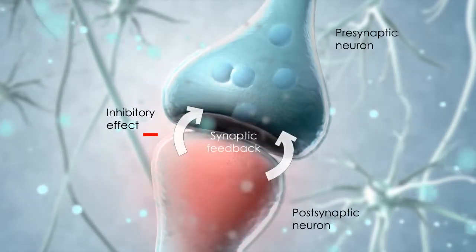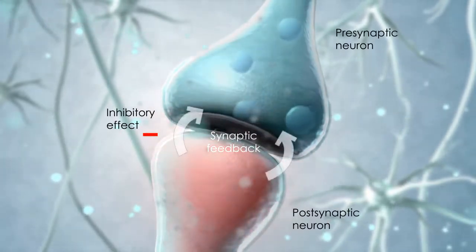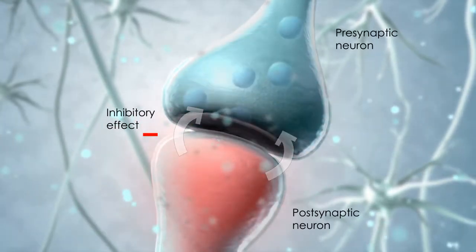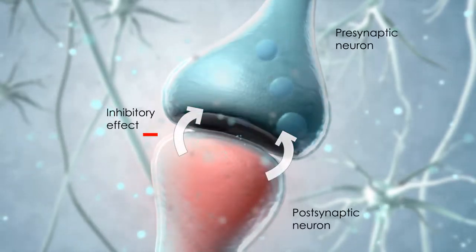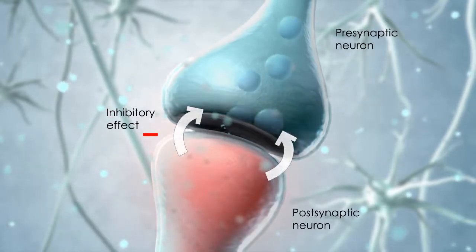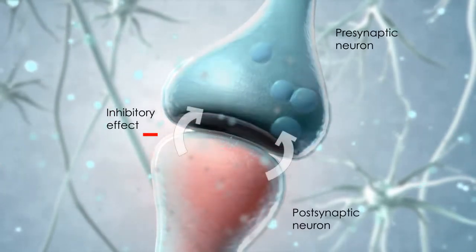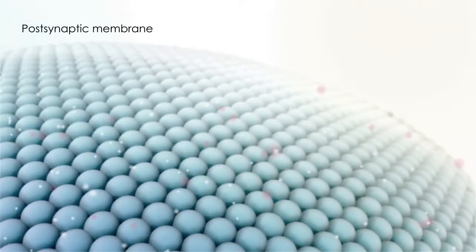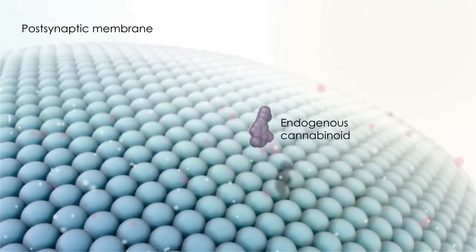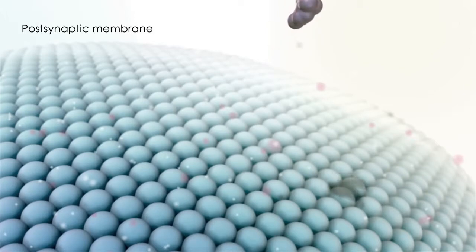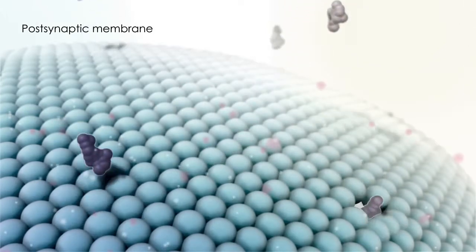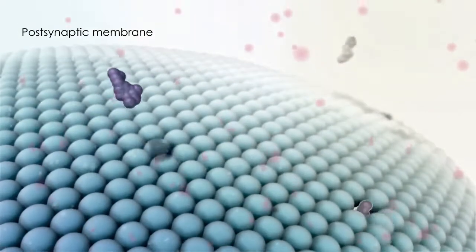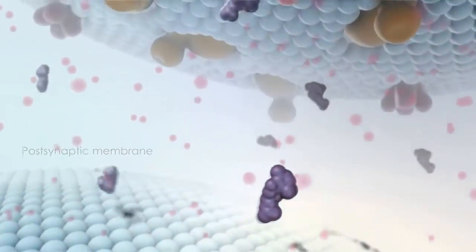A synaptic feedback mechanism is believed to be an inherent part of our normal neuroregulatory processes, including descending pain modulation. In many regions of the CNS, including the periaqueductal gray, the generation of postsynaptic action potentials is modified by an endogenous cannabinoid regulatory system. Endogenous cannabinoids are synthesized on demand from the phospholipid bilayer of the postsynaptic membrane. These lipophilic ligands are released directly into the synaptic cleft and act in retrograde fashion on the presynaptic neuron where the cannabinoid receptors are expressed.